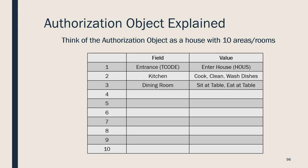Let's say you want to go to the dining room. That area also has to be listed in the authorization object as a field, and then the value for that field will determine whether you can eat at the dining table or if you can only sit at the dining table. As a reminder, all 10 rooms or areas do not need to be used — only the ones that are necessary for the action that the user is trying to perform.